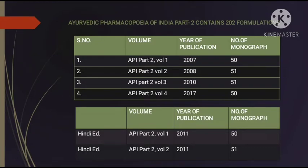The Ayurvedic Pharmacopoeia of India Part 2 contains 4 volumes and a total of 202 formulations. Part 2 Volume 1 was published in 2007 with 50 monographs; Volume 2 in 2008 with 51; Volume 3 in 2010 with 51; and Volume 4 in 2017 with 50 monographs. Indian editions of Part 2 Volume 1 and Volume 2 are also available.